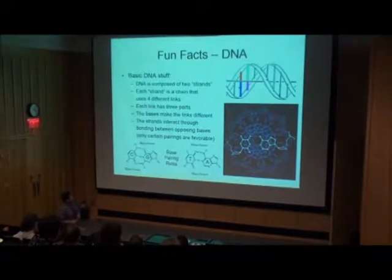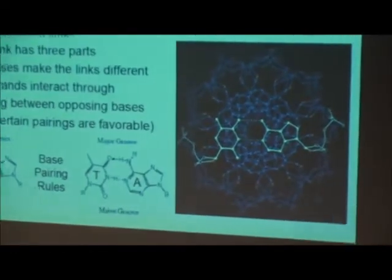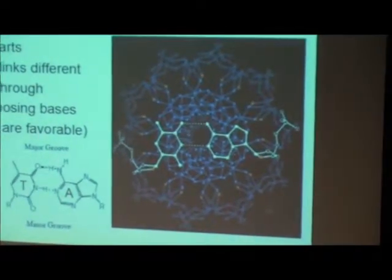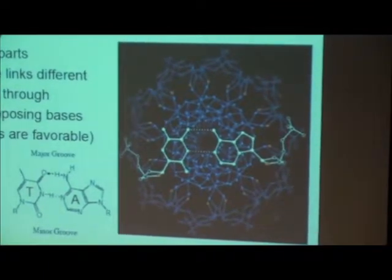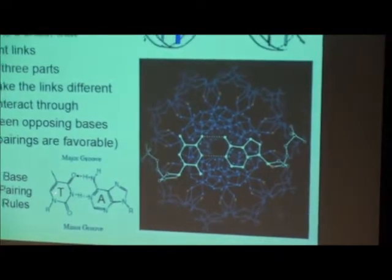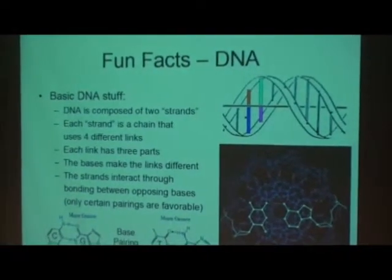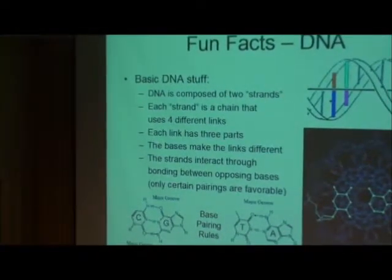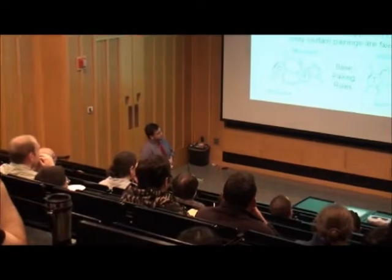Getting a little deeper: the strands interact through bonding between opposing bases, and only certain pairings are favorable. You have these two strands of DNA pulled together by base pairs in the middle through hydrogen bonding interactions. T's only interact with A's, and C's only interact with G's — at a basic level, obviously more complicated than that. This figure shows you the DNA double helix looking down the axis, so you can see the base pairs and the sugar-phosphate backbone. It's just two strands that stick together with these base pairing interactions.